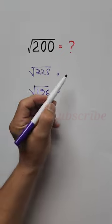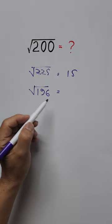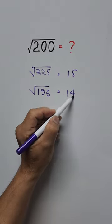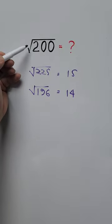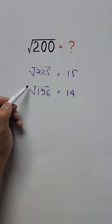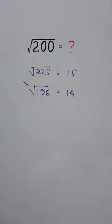So we have here square of 225, that's 15, and square of 196 is 14. Which one is closer to square of 200? Square of 196 is closer to square of 200.